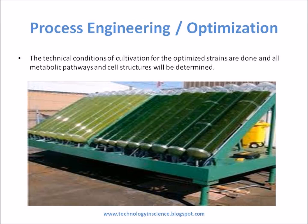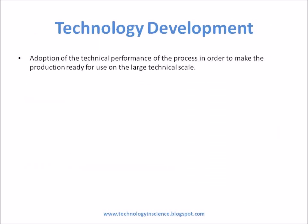Process engineering involves determining the technical conditions of cultivation for the optimized strains, and all metabolic pathways and cell structures are determined. Technology development is the next step, involving the adoption of the technical performance of the process in order to make production ready for use on a large technical scale.